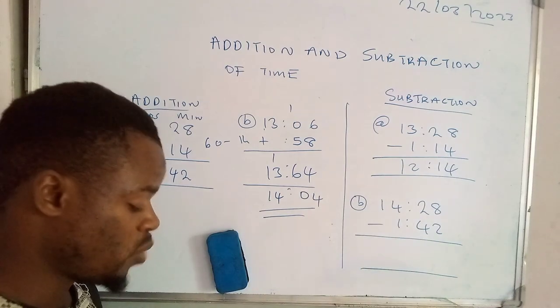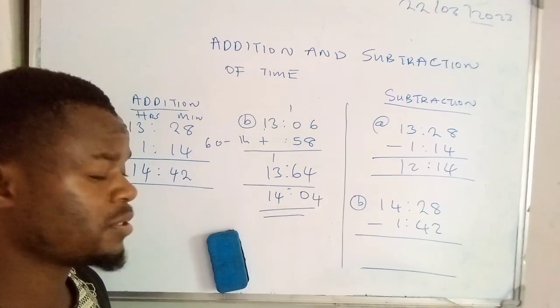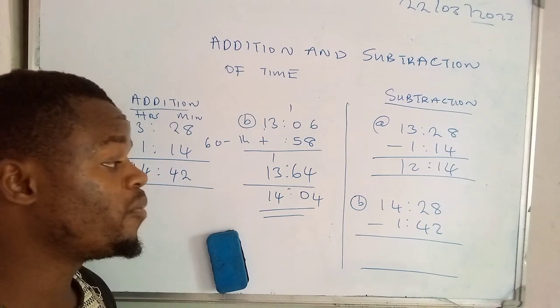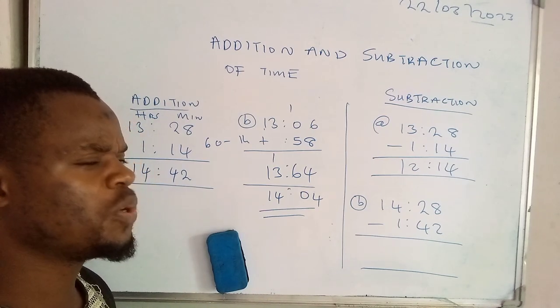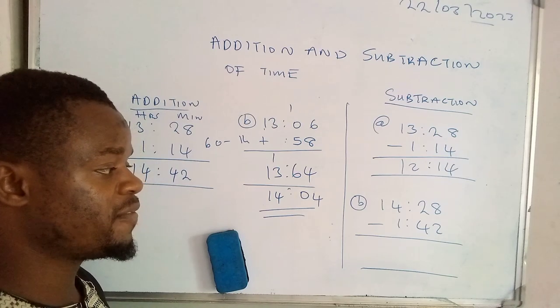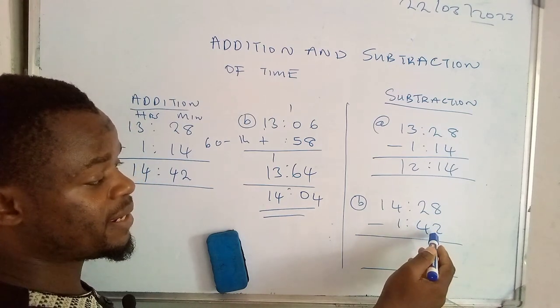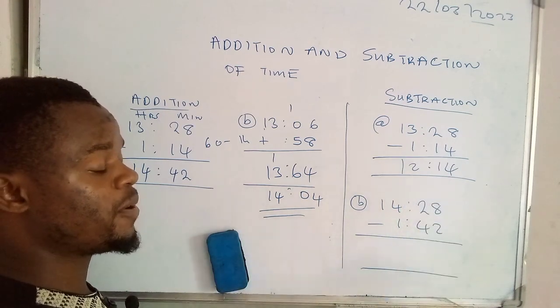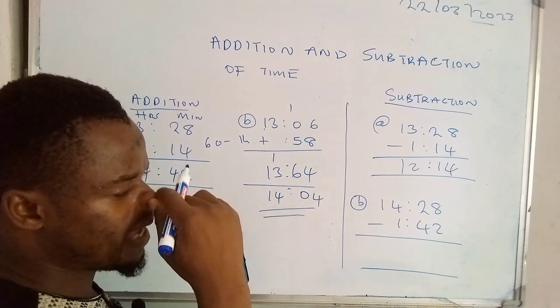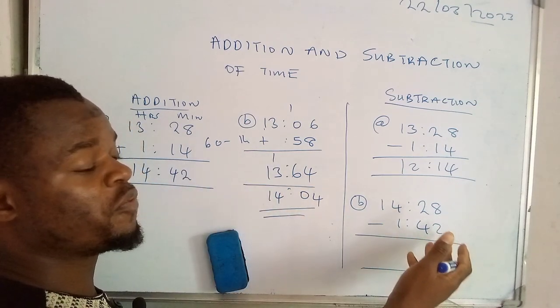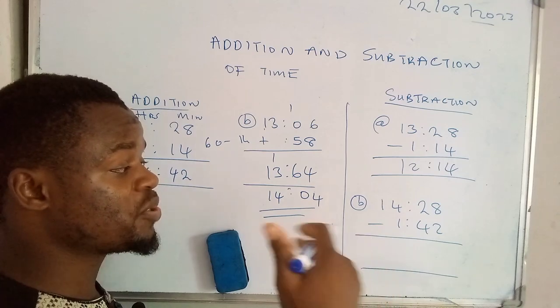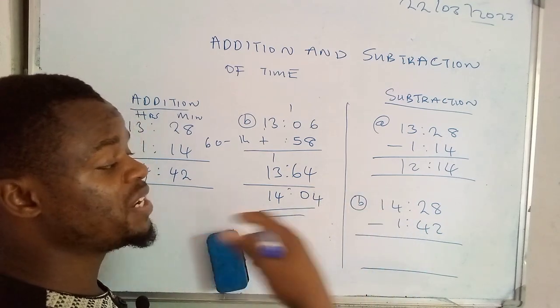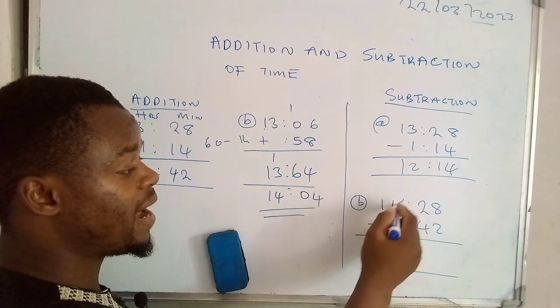Let's check on the second example. Now here when you're subtracting time, first of all you don't have to subtract directly. First check the minutes at the bottom, the ones that you are subtracting from those which are on top. So you're like, okay, can we really subtract 42 from 20? If you can't, and if that's the answer you say no, we can't subtract 42 from 20, then what we need to do is we have to get one hour from here.